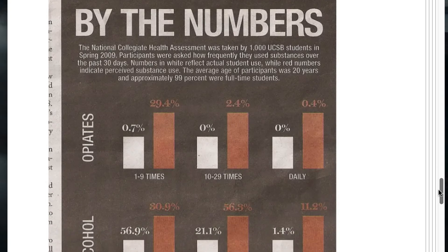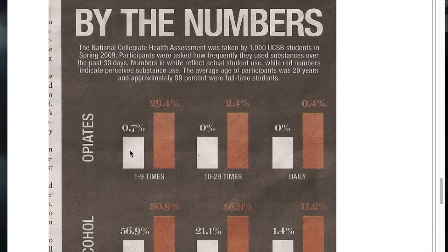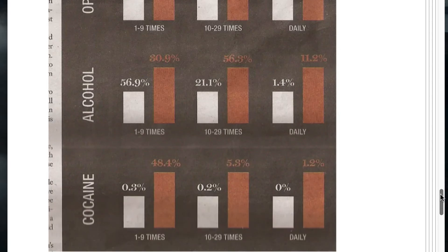Here's another one with a completely inconsistent scaling system. We have 0% with some positive notation, and 2.4% being one height, but the same height elsewhere is 0.4%, and yet again the same height is 29.4%. This appears to be comparing actual versus perceived values, but it's unlabeled until you actually read it carefully. Another completely dreadful graphic.